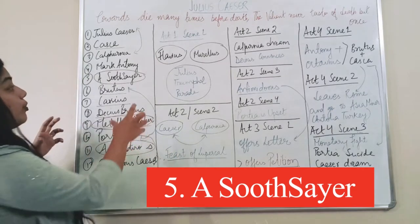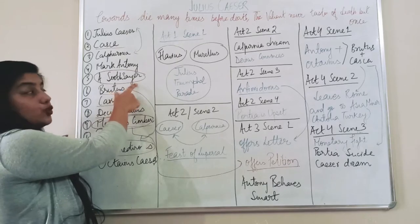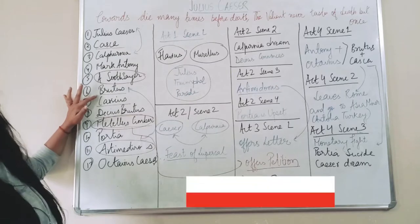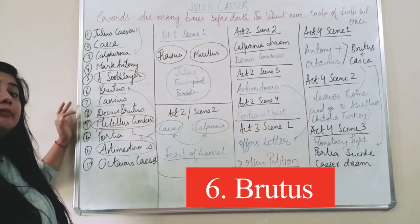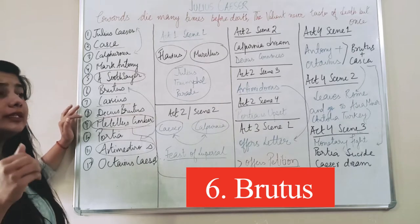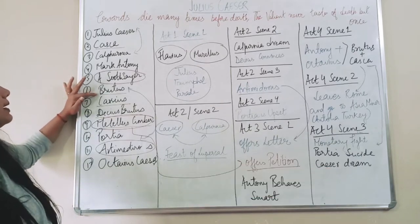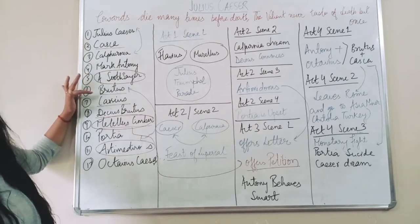So a very important information was delivered by soothsayer in the story. Soothsayer said something to Julius which he didn't listen. Brutus was a friend of Julius but because people manipulated him, people instigated him against Caesar, so later on he became an opposition.